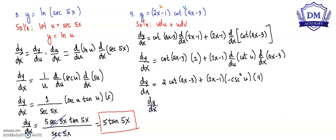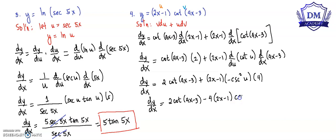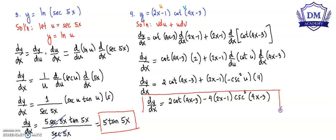So our derivative of y with respect to x is equal to 2 cotangent of 4x minus 3 minus 4 times 2x minus 1 multiplied by cosecant squared of 4x minus 3. This is our derivative of y with respect to x. Thank you for watching.